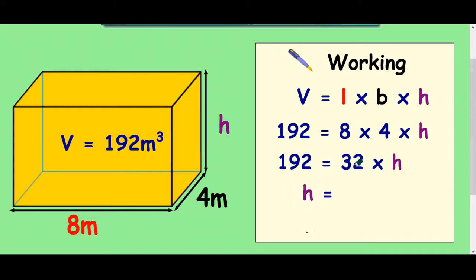So it's how many 32s go into the 192. So it's 192 divided by 32. And you can just do that in your calculator and you would pop out with 6 meters.